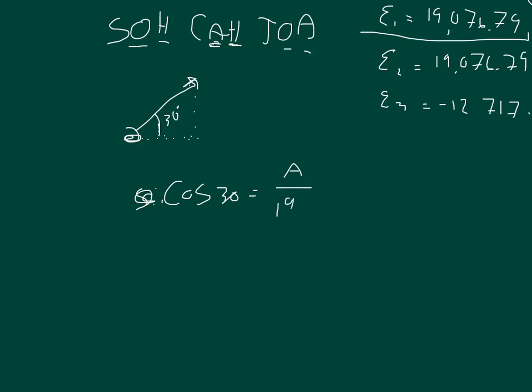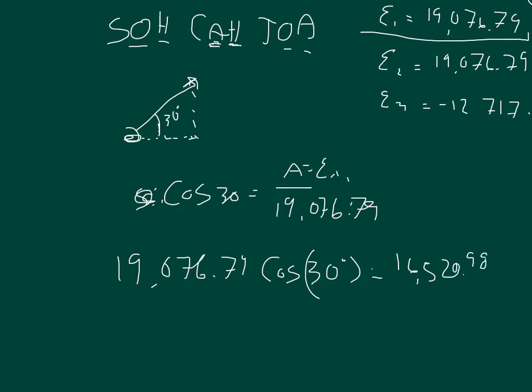Cosine 30 is equal to adjacent over hypotenuse. Our hypotenuse is 19,076.79. To find Ex1, we take 19,076.79 cosine of 30 degrees, or if you're doing radians, it's 0.52359878 radians. The Ex1 is equal to 16,520.98. And then you're going to find that the Ex2 is the exact same value, so 16,520.98.